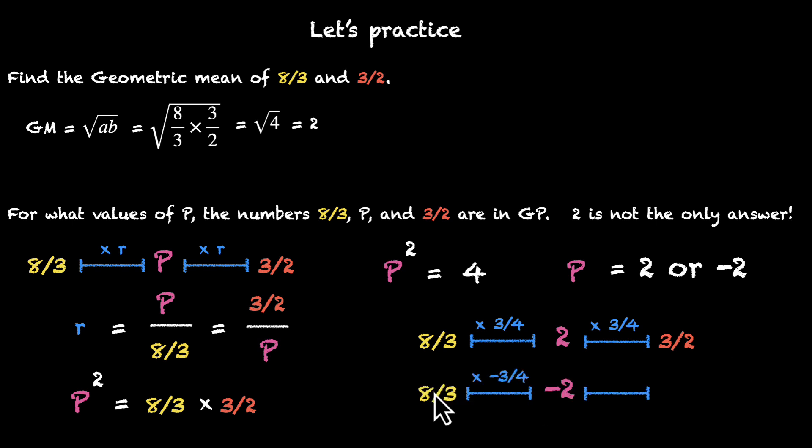But you also get another GP when you have the common ratio is minus 3/4. So 8/3 times minus 3/4, 3 cancels out. 8 by 4 is 2. And a minus sign gives us minus 2. And you do the same thing again. 2 by 4 is 1/2. And then 3 on the numerator, minus minus cancels out. And then you get back to 3/2.